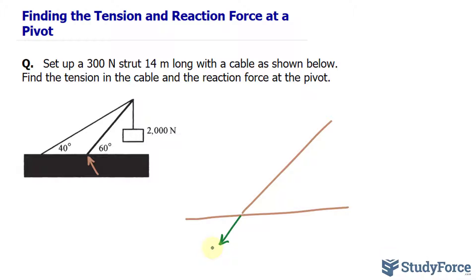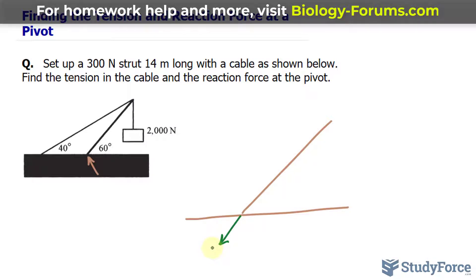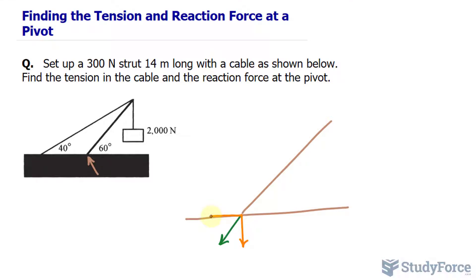The x and y components are important here because this is an equilibrium-type problem. When it comes to equilibrium-type problems, the sum of the forces along the x-axis all sum up to zero, and the sum of the forces' components along the y-axis sum up to zero.